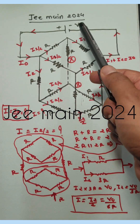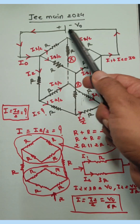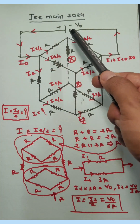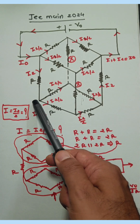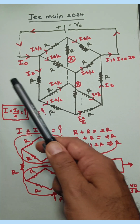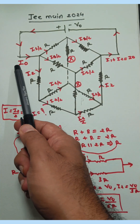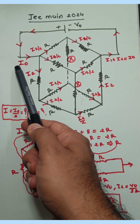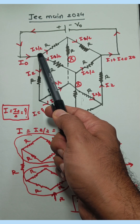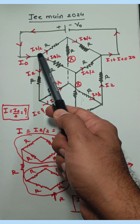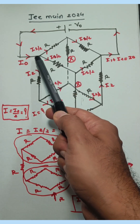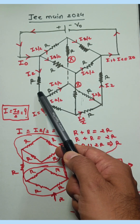JWMN2024 question: battery voltage is V0 and a resistance cube is given. Find the current through this resistance. Suppose battery current is I0 and it is divided into three parts: I1/2, I1/2, and I2.